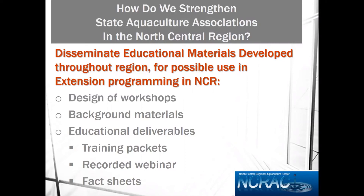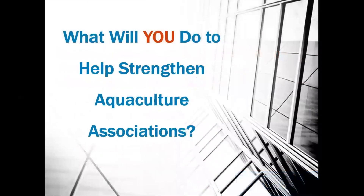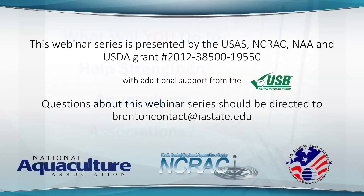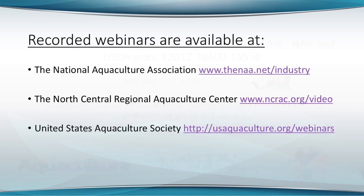At the end of the day, getting back to the main topic of how to strengthen state aquaculture associations, I really cannot emphasize enough that it comes down to individuals. Individuals need to step up and contribute some of their time, engage with other members, and work on the initiatives that are important — that create value for belonging to their associations. So I'd like to leave you with a question: What will you do to help strengthen aquaculture associations? Thank you.